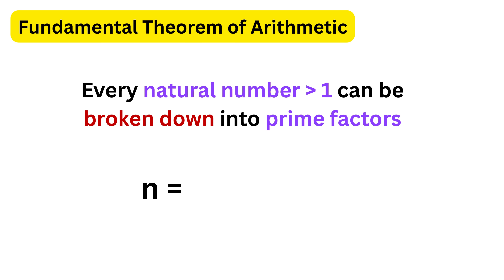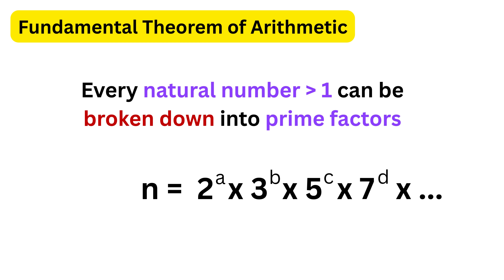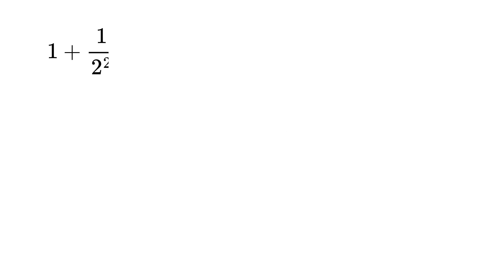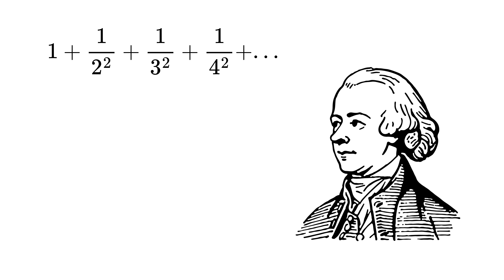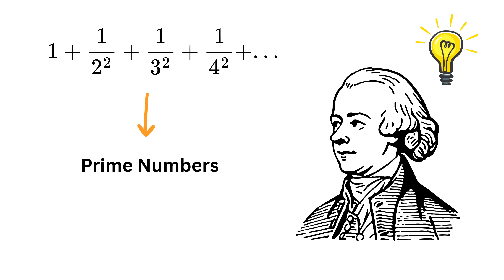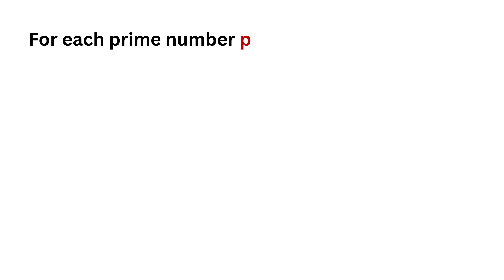So any natural number n can be written as two to the power a, times three to the power b, times five to the power c, times seven to the power d, and so on. This is what makes prime numbers so important in mathematics. Now consider this sum: one plus one over two squared plus one over three squared plus one over four squared and so on. Euler thought: how can we rewrite this entire sum using prime numbers?